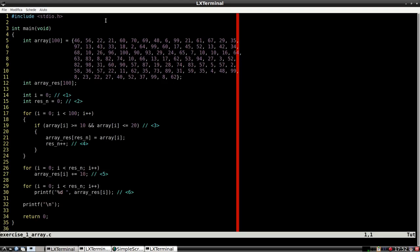Let's discuss the code a little bit. At line 14 we declare i, which is a variable used as iterator for the for loop. On the next line, you see res_n. This is a variable that keeps track of the number of elements between 10 and 20.